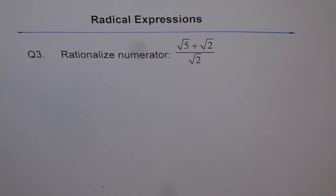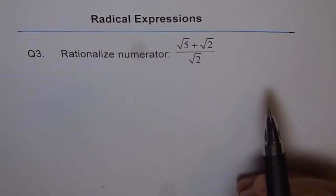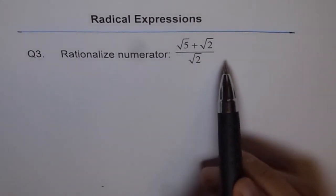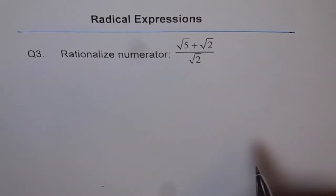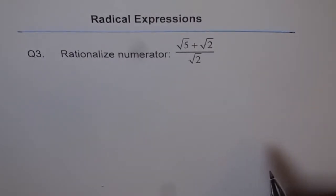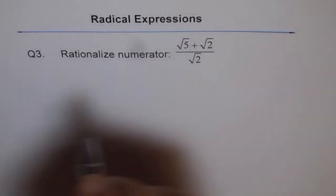Radical expressions, question 3: rationalize the numerator — square root 5 plus square root 2, divided by square root 2. Rationalizing the numerator means we will multiply both numerator and denominator by the conjugate of the numerator.